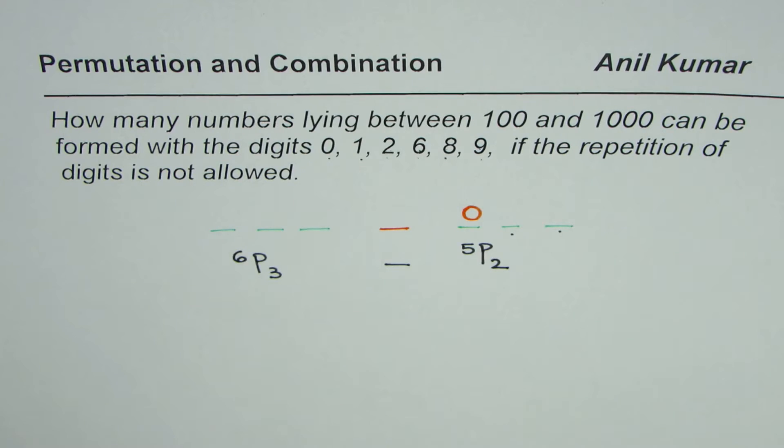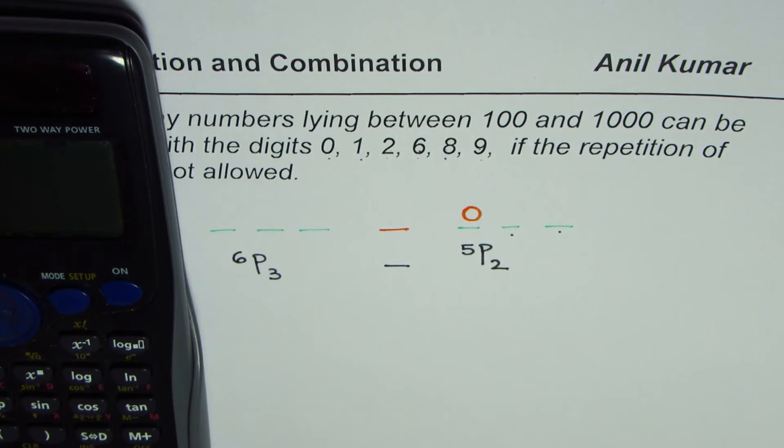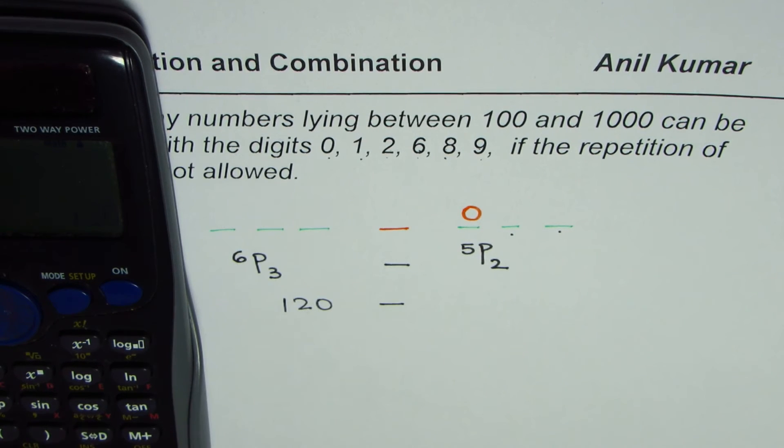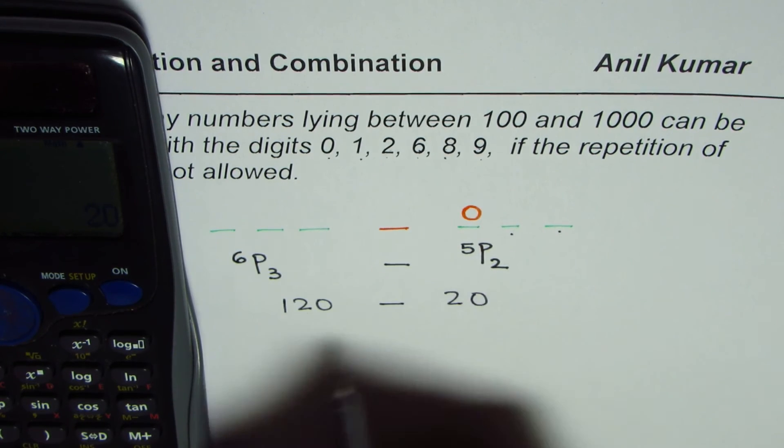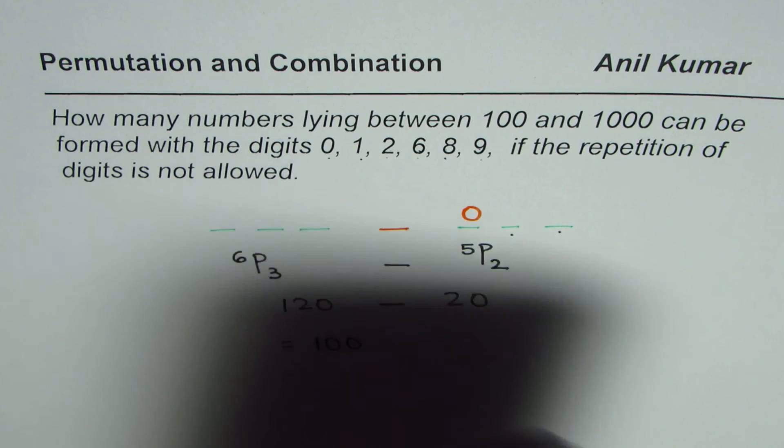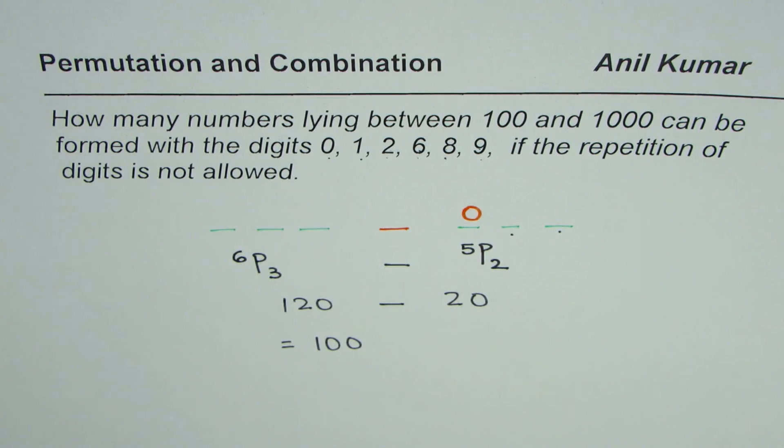So that becomes the answer for this particular question. Now we can calculate using calculator. So we have 6P3, which is 120, take away 5P2, which is 20. So we have 100 as the answer for such a question.